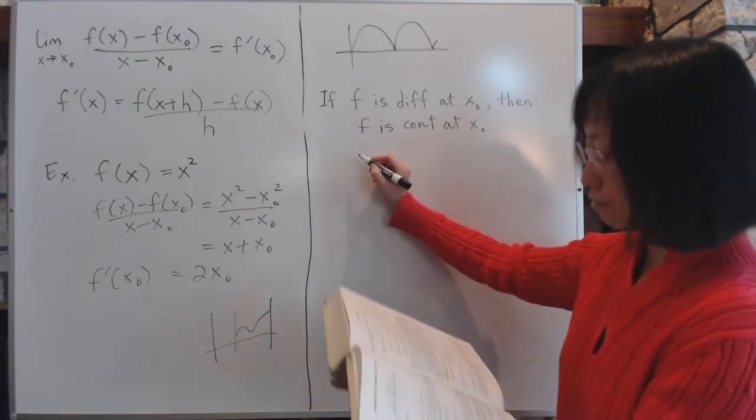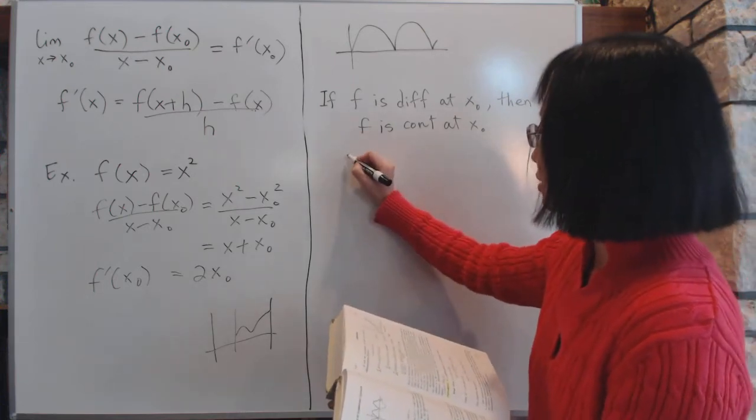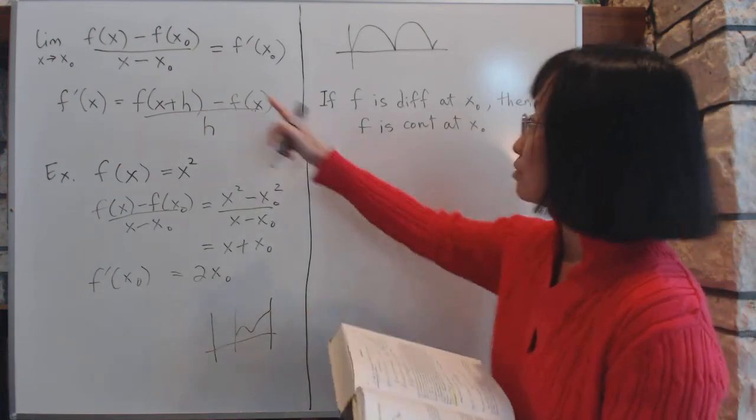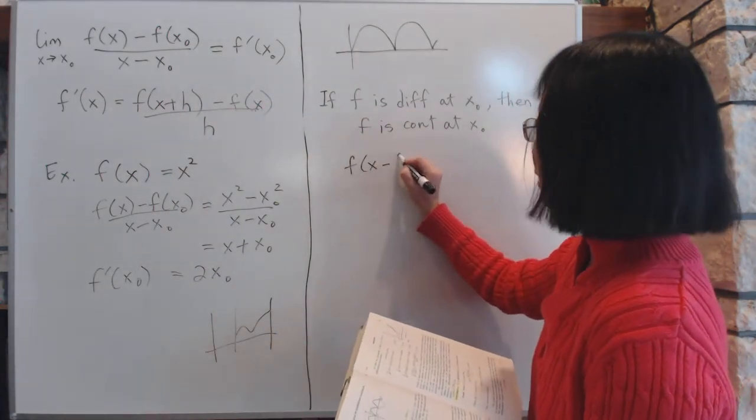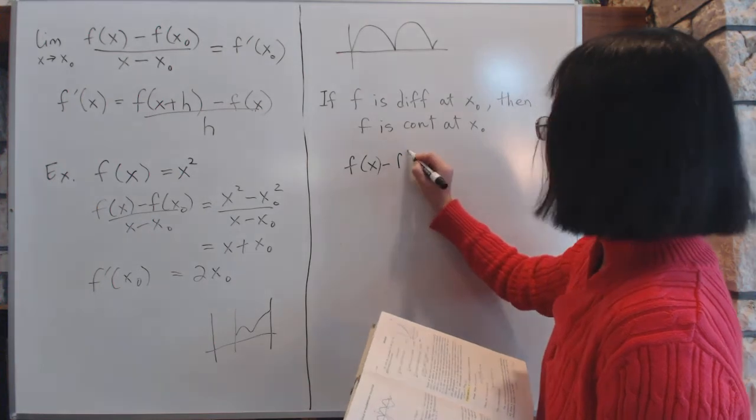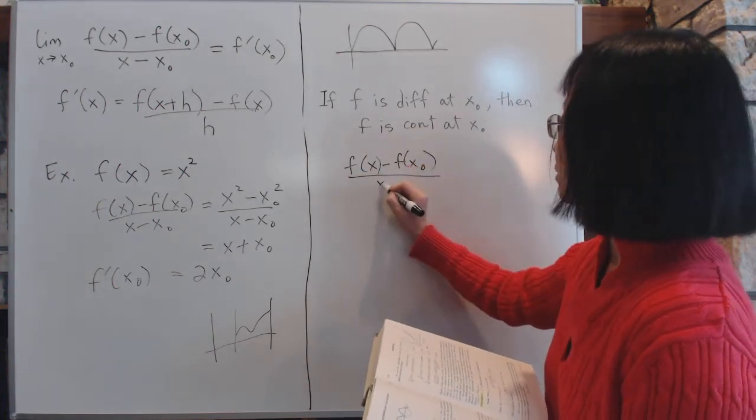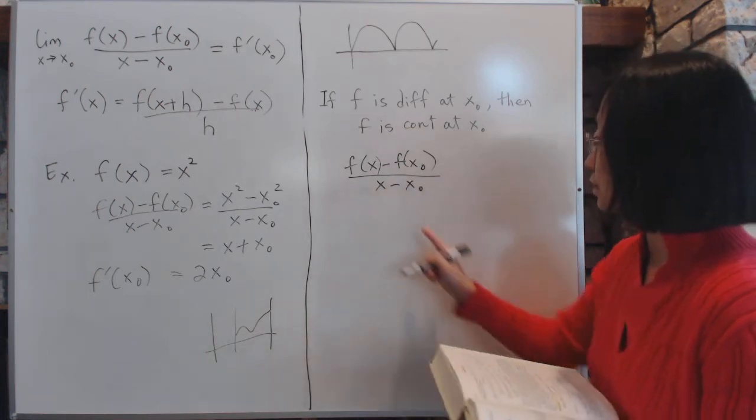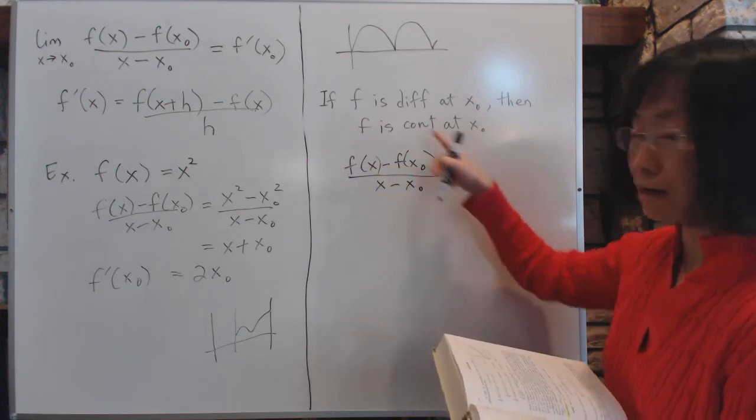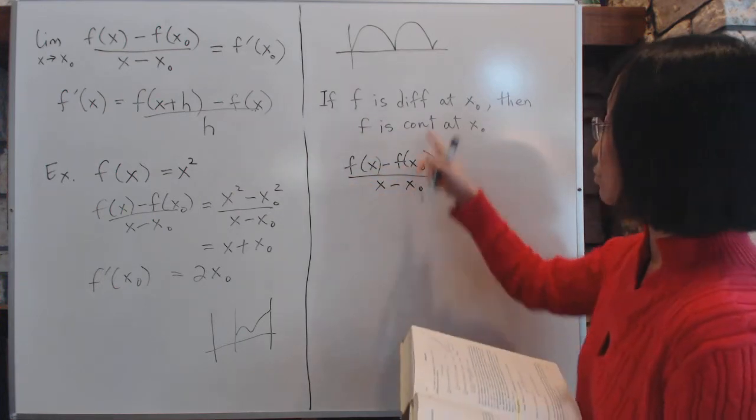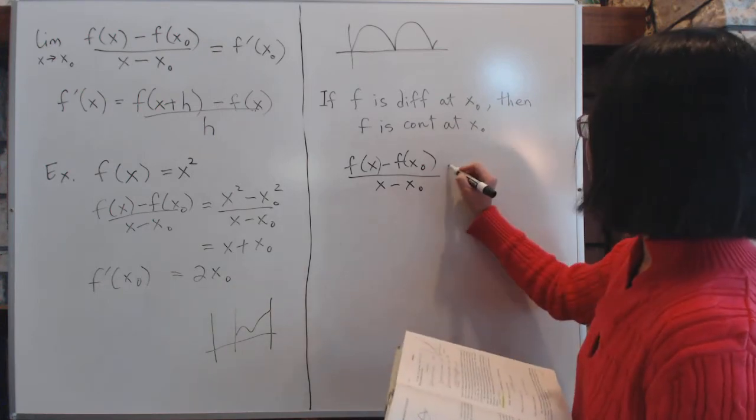You can prove it by using this particular trick. For example, first we'll write down this formula right here. So you have f(x) minus f(x0) divided by x minus x0, and we know that this thing, this is what will become the f prime, and which we know does exist at x0.